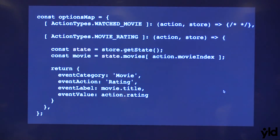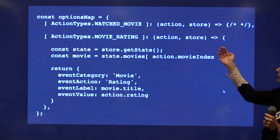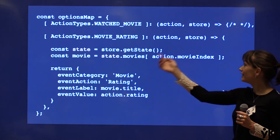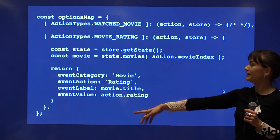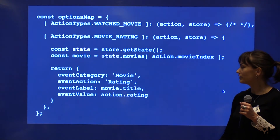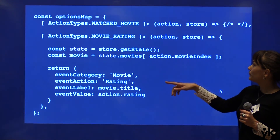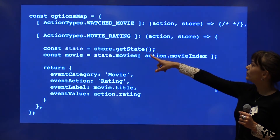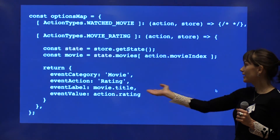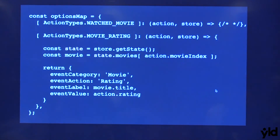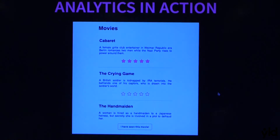Here's our options map with an example. Because we have access to the store and the state, we can just get the state from the store. We evaluate which movie we are looking at. This is really just some Google Analytics stuff — so our event category, as defined by the project manager, is 'movie'. The action is going to be 'rating' in this case. We can get the movie title because we were able to access the store and we just use the movie index to get the relevant movie's information. And the event value is then going to be the rating.